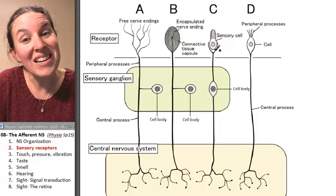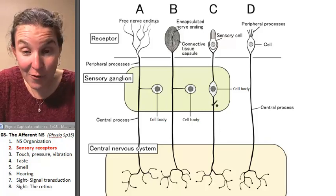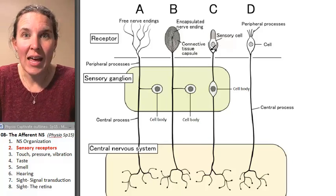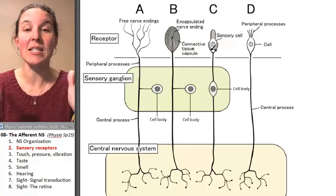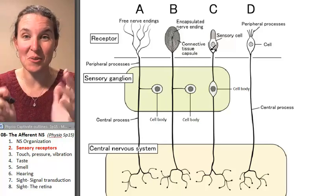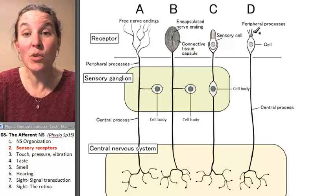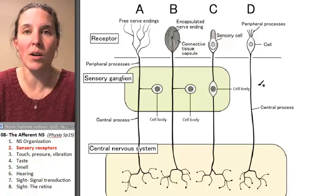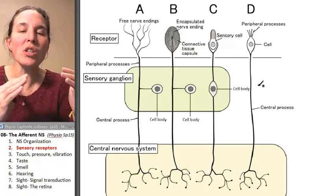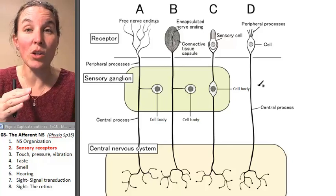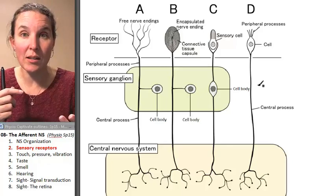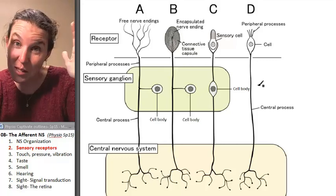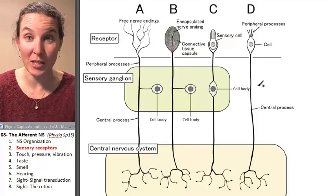You can also connect these afferent neurons to a sensory cell. The cell is modified to pick up sensory stimuli. This is the same thing, just little pieces coming off of your neuron. So there's lots of different ways that you can create an opportunity to translate stimulus into an action potential.